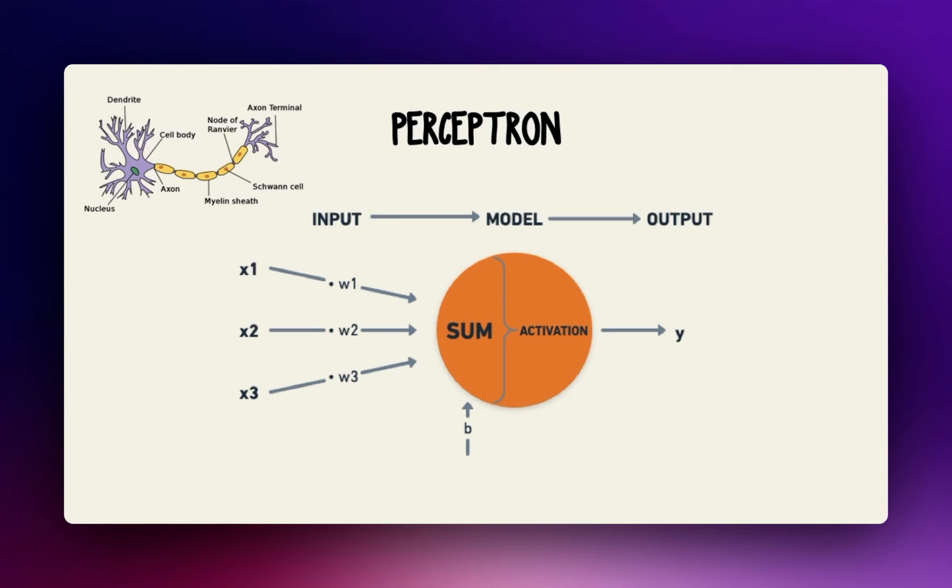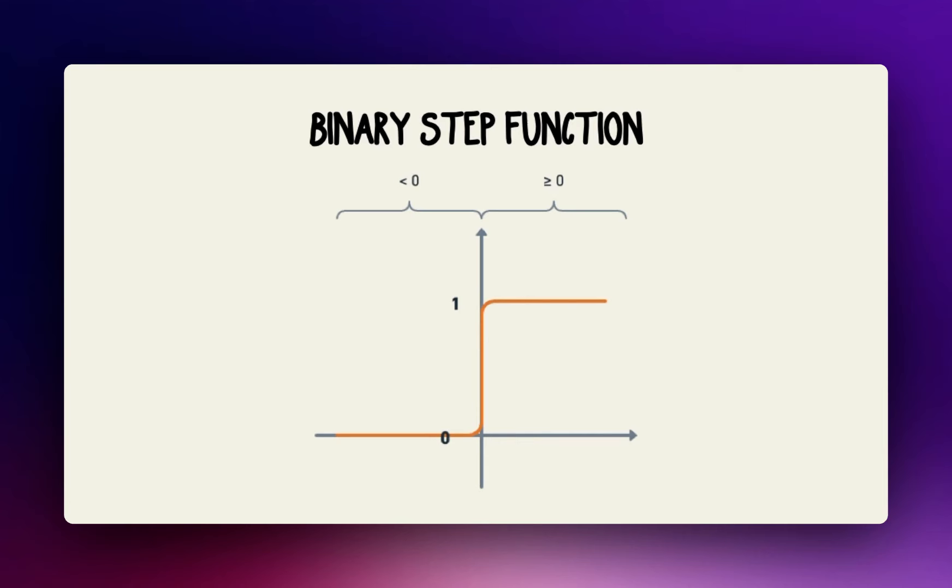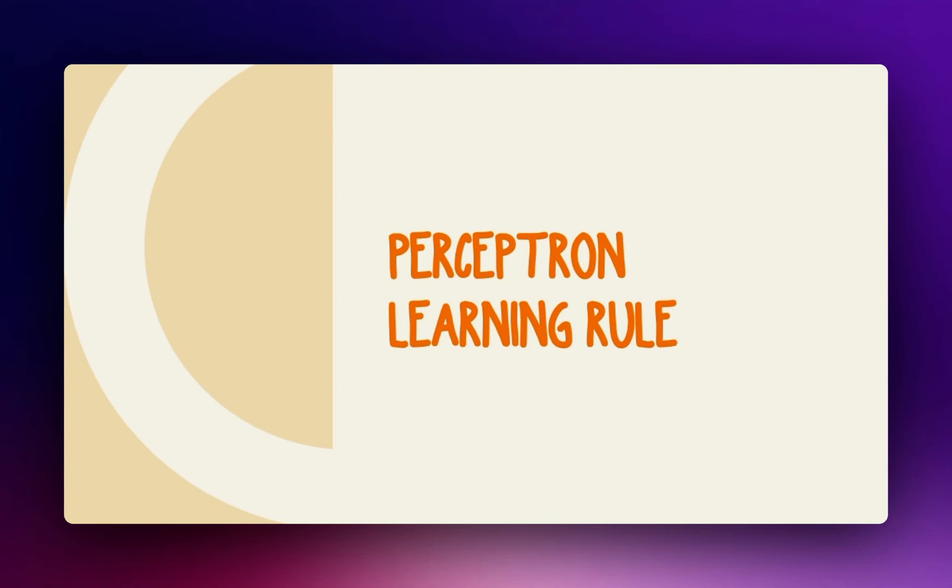An example of an activation function is the step function. It outputs 1 for all positive inputs and 0 otherwise. The power of the perceptron comes from its ability to automatically learn the weights and bias numbers through a step-by-step process called the perceptron learning rule.